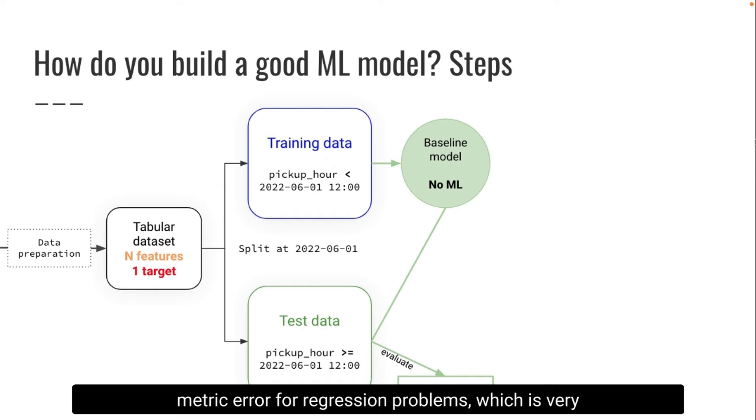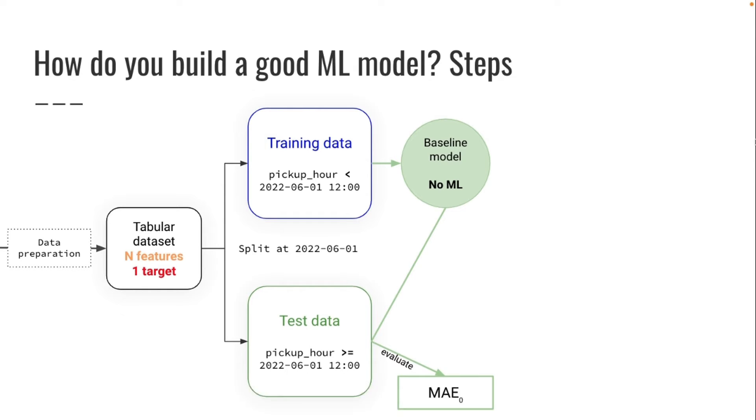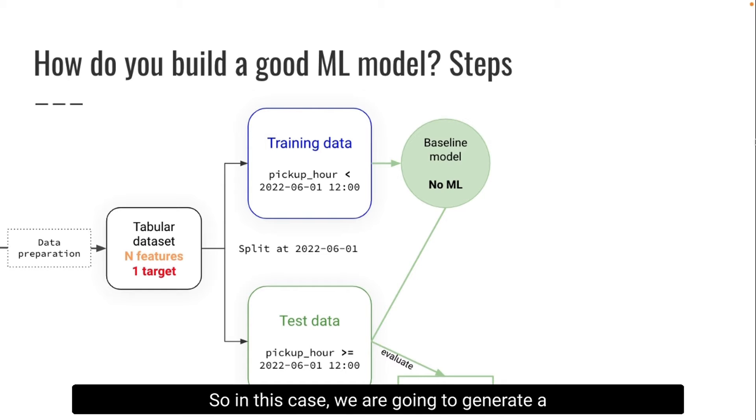For our problem, we're going to use a metric for regression problems which is very common, which is mean absolute error. So in this case, we're going to generate a baseline model using a simple rule, and we're going to test it using our test data, and we're going to get our baseline mean absolute error, our baseline performance. Once you have this value, you have a reference point against which you can compare successive iterations and can basically help you understand if your next model is actually better than the previous one.